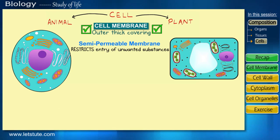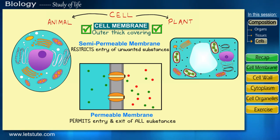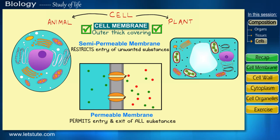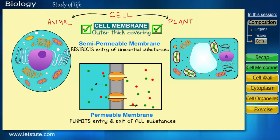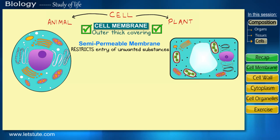Now there's also something called a permeable membrane. In contrast to a semi-permeable membrane, a permeable membrane will allow the entry and exit of all types of substances in and out of the cell. But a cell membrane is always a semi-permeable membrane.